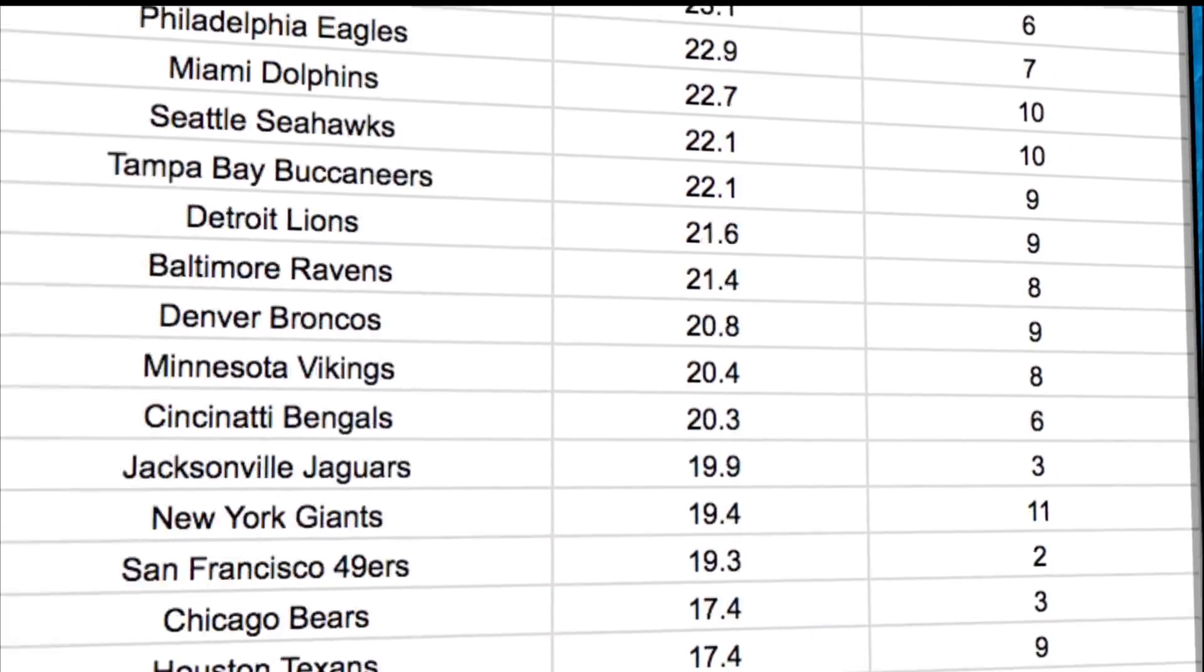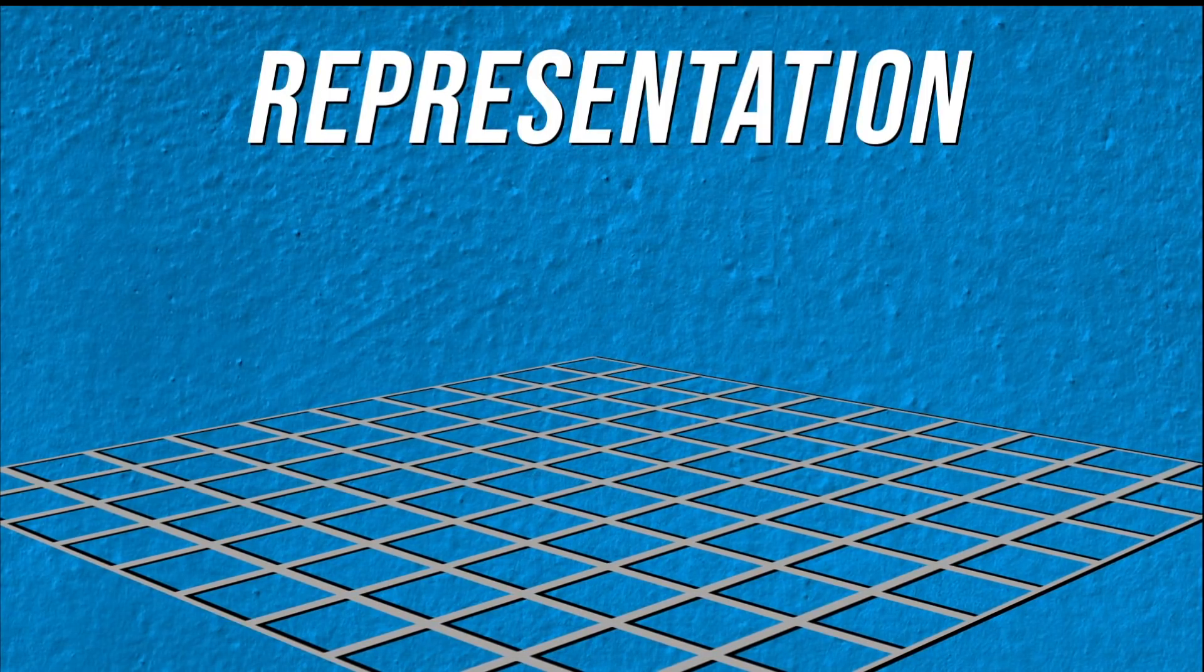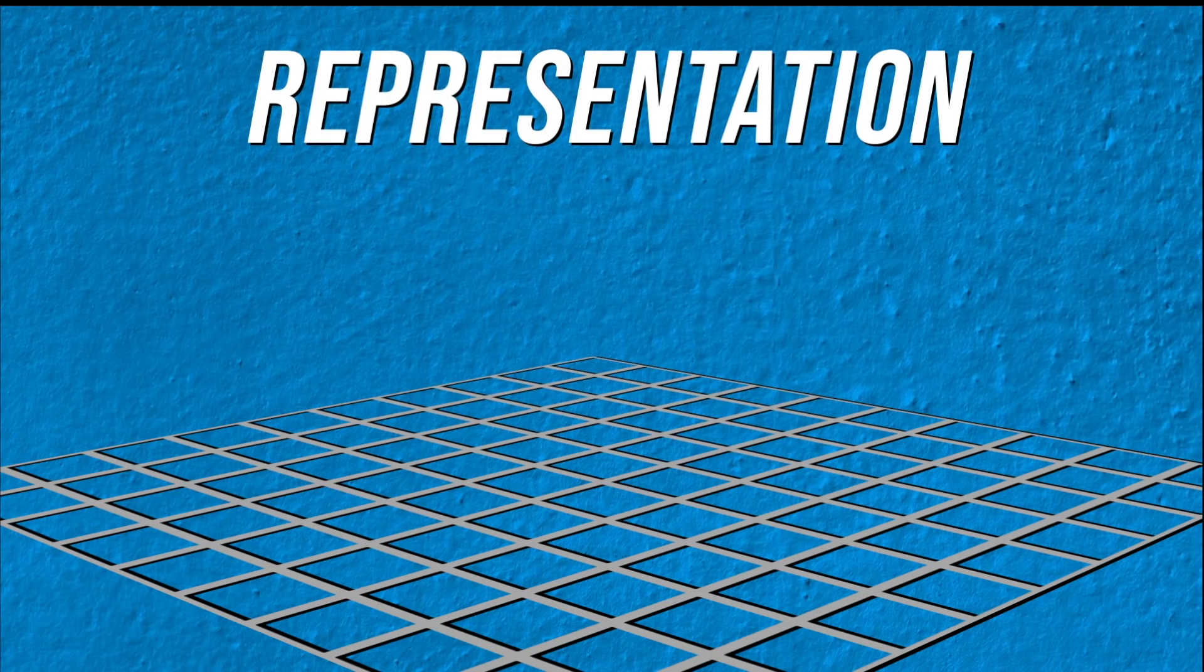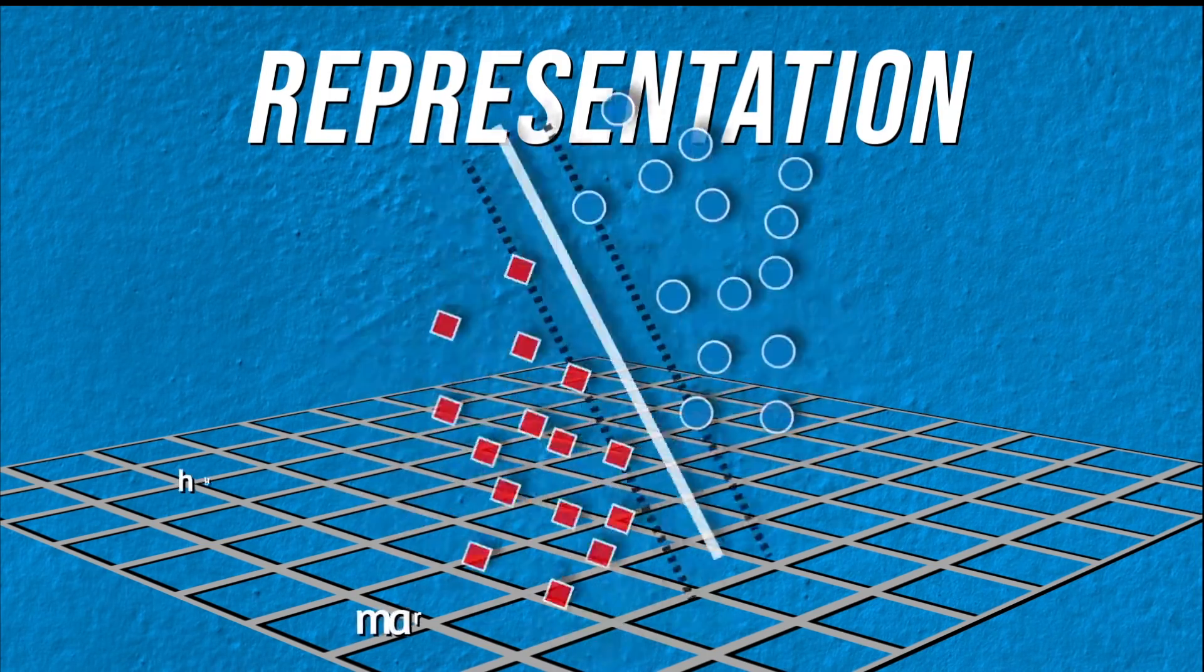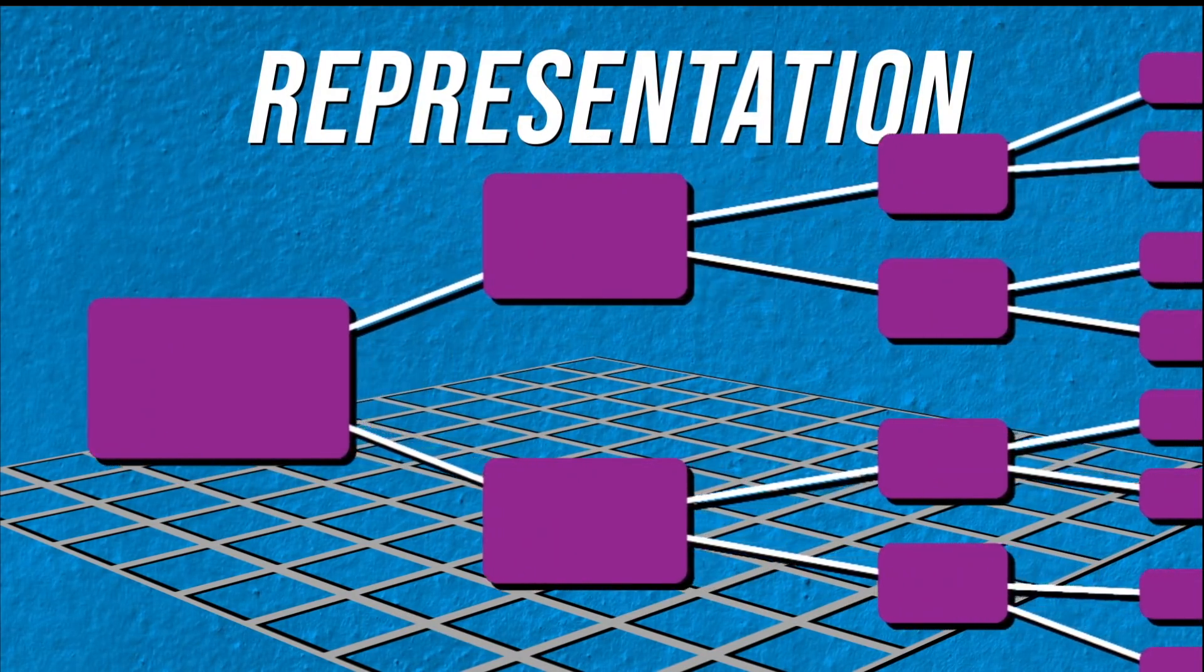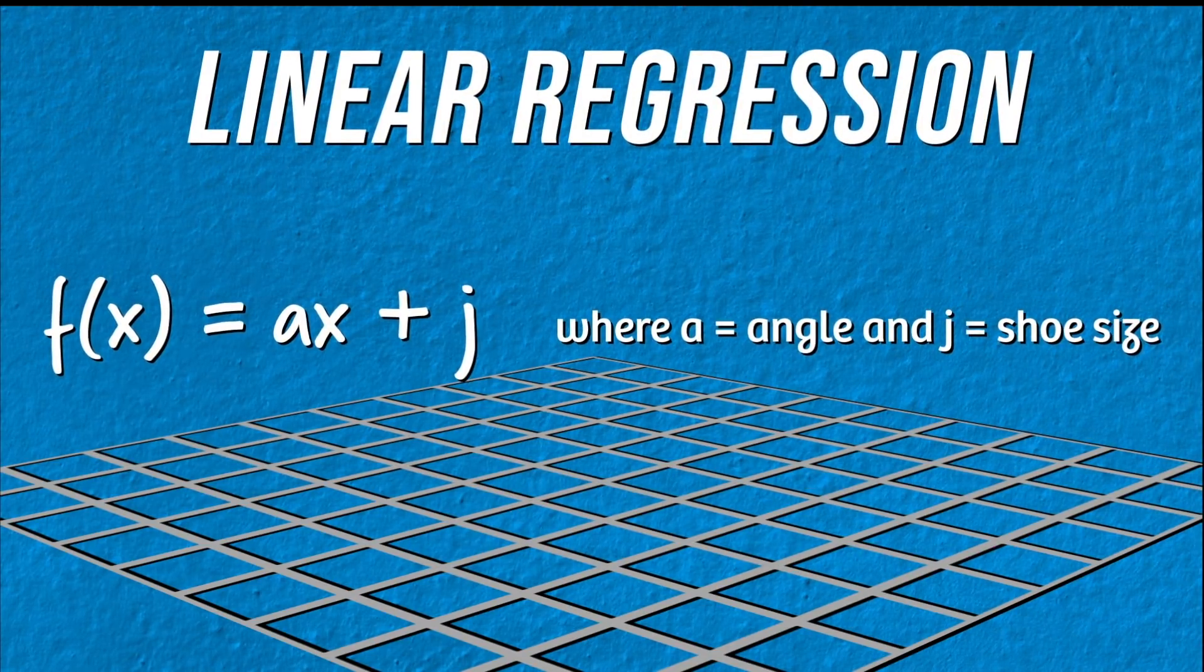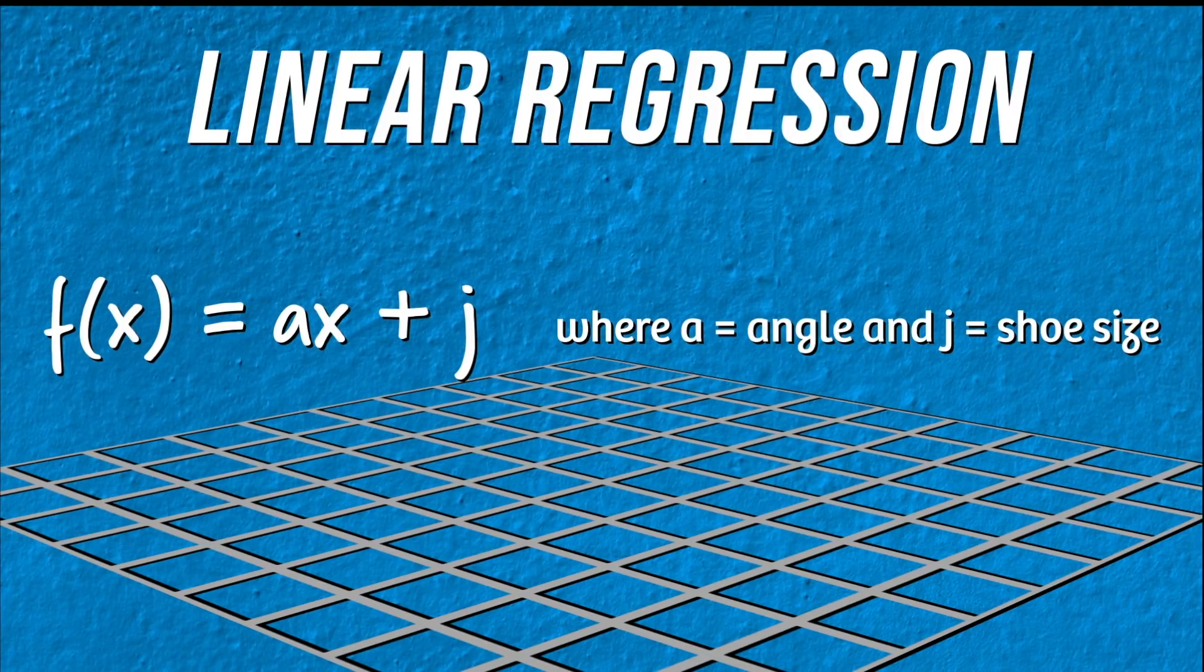Representation is the space of models we could use for some dataset. There are so many different machine learning models that we could use. A three-layer feedforward neural network. A support vector machine. A decision tree. But let's start with something simple. A linear regression model. It's a line that intersects as many data points as possible. Then using that line we can make a prediction about any team.